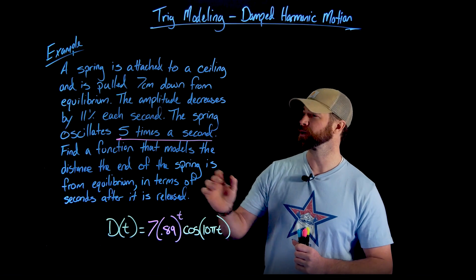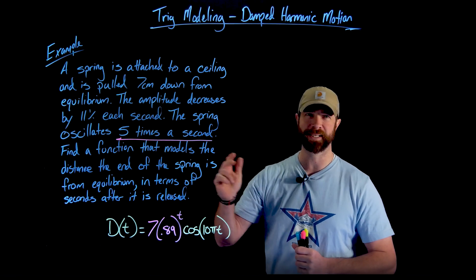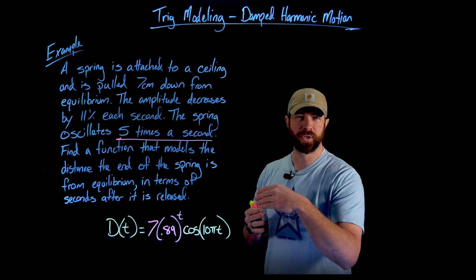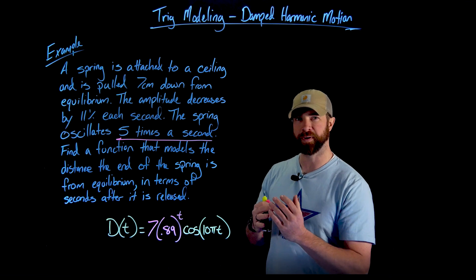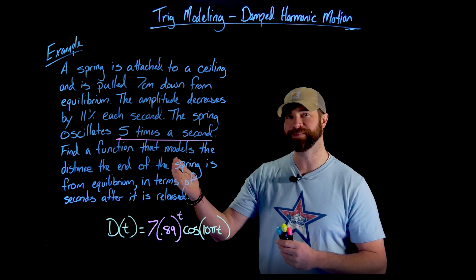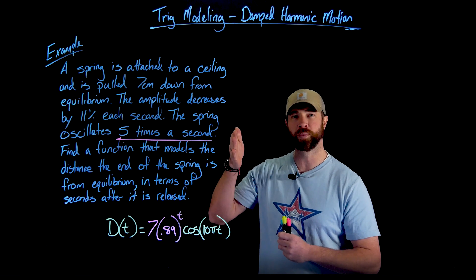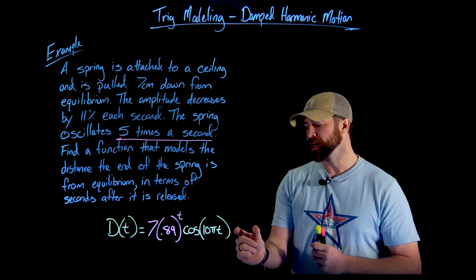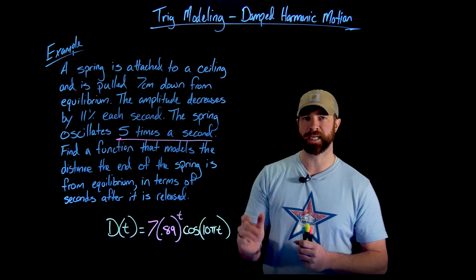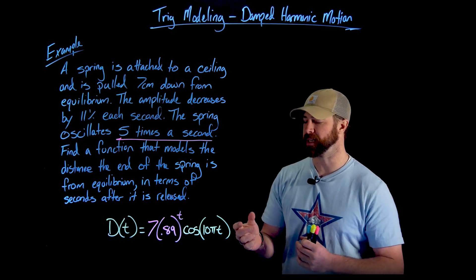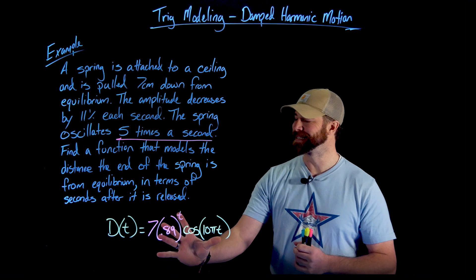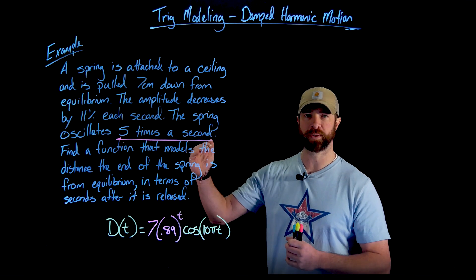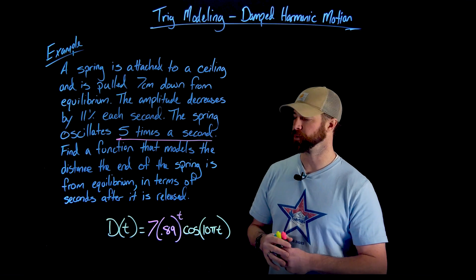This 10π is what creates this oscillation of 10 times per second. We took 2π and divided it by one-fifth because if it oscillates five times per second, it oscillates every one-fifth of a second. We're not adding any midline here. We added zero that doesn't do anything because we're measuring this distance all based on the equilibrium of zero of this spring.